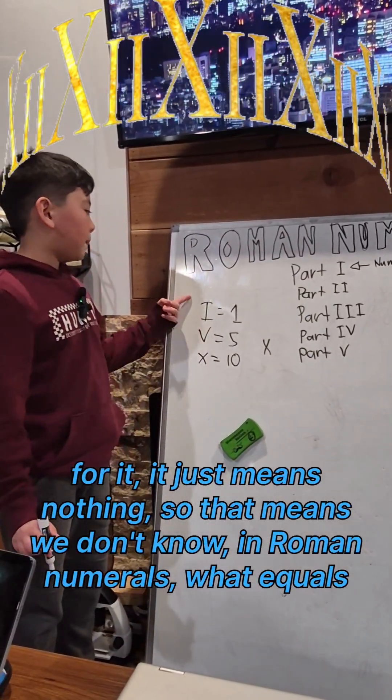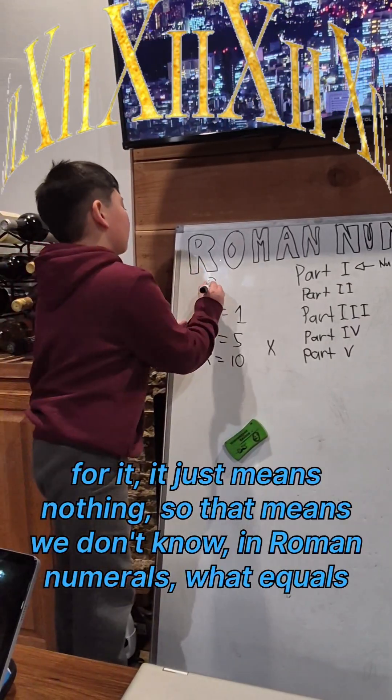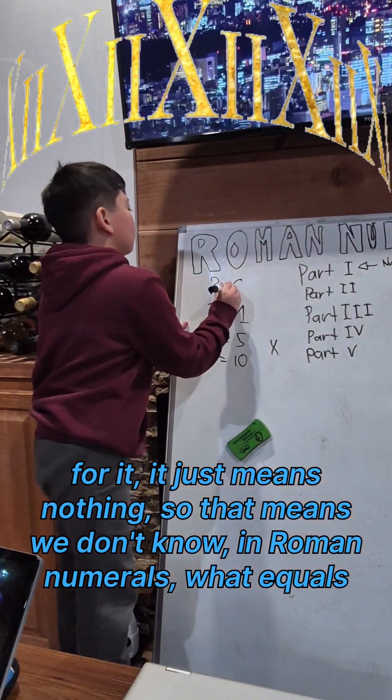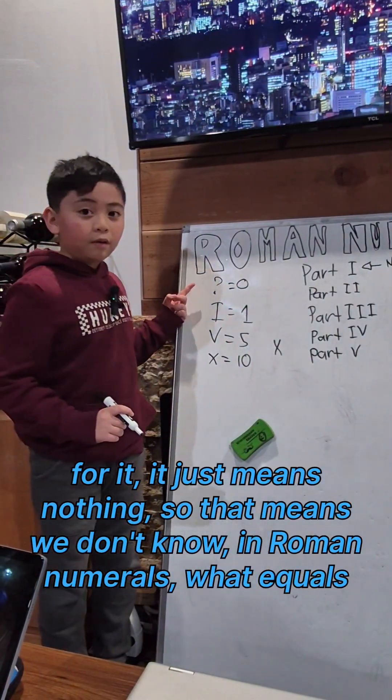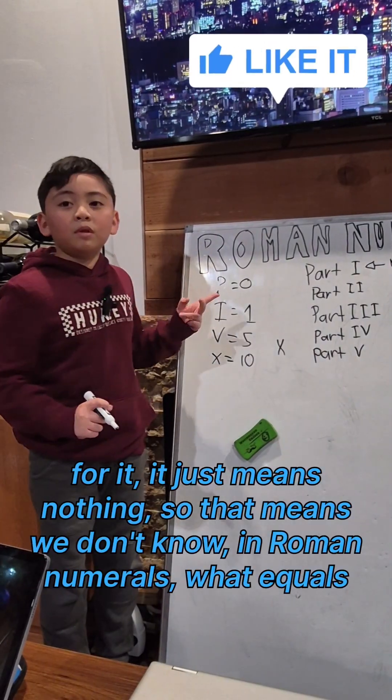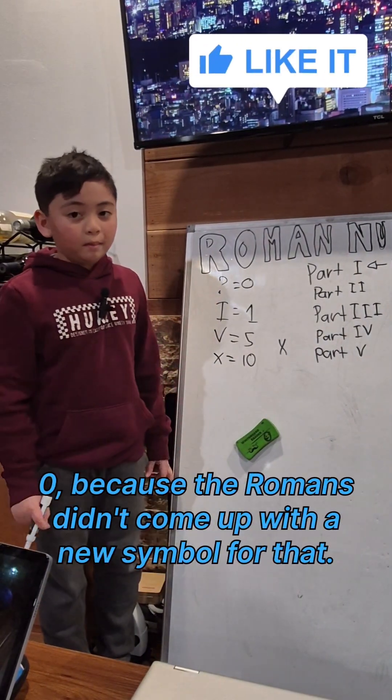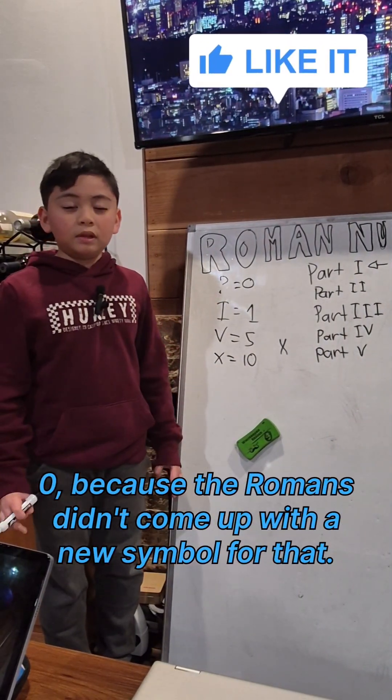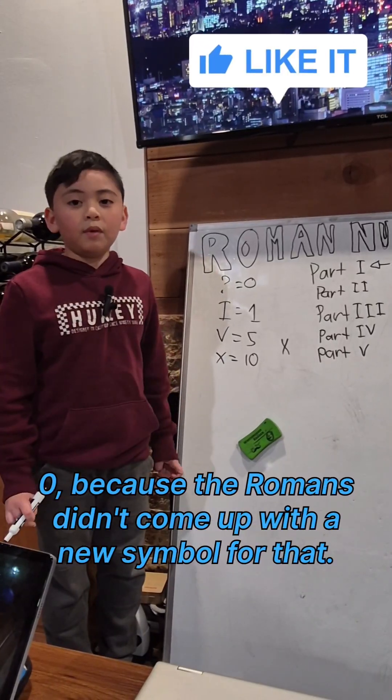So that means we don't know what, in Roman numerals, equals zero, because the Romans didn't come up with a new symbol for that.